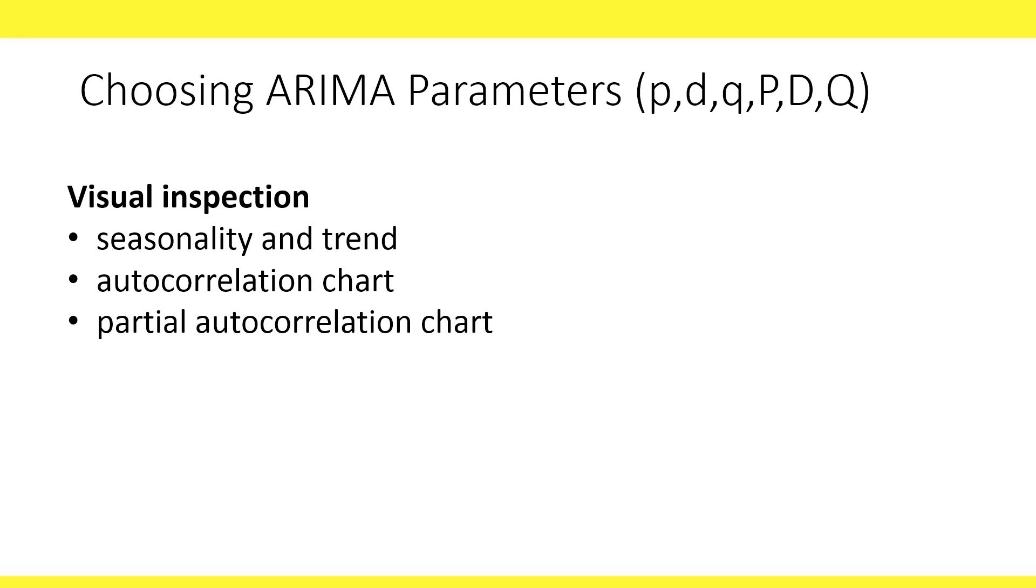Choosing the parameters based on visual inspection uses different rules of thumb, such as a slowly decreasing autocorrelation chart combined with a sharp decline in the partial autocorrelation chart calls for q equals zero and p equal to the largest partial autocorrelation.